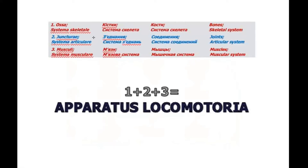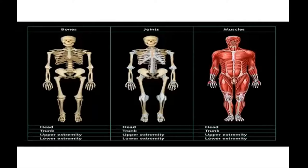Next, the locomotor apparatus. The locomotor apparatus, I repeat, consists of bones, joints, and muscles. Another variant of the name is the locomotor system or musculoskeletal system in English.